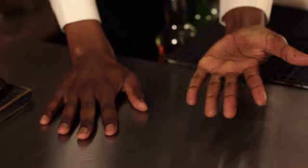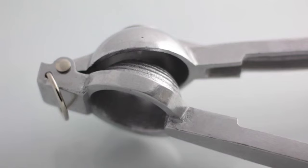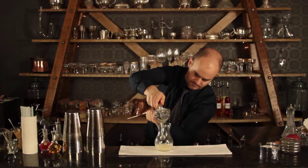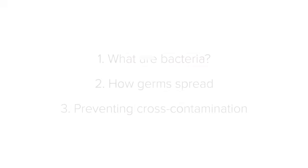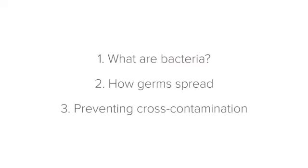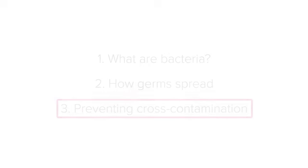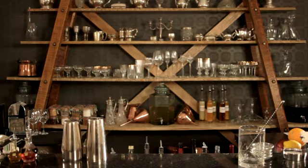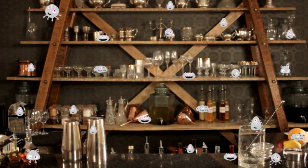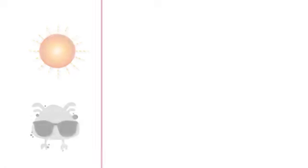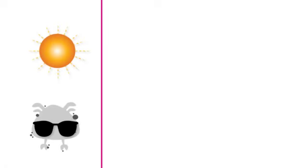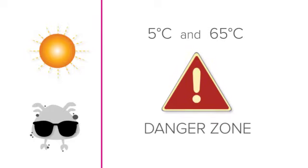Our hands and equipment need to always be clean so that they don't contaminate the drinks that we prepare with germs. Let's finish off with preventing cross-contamination. One of the most frightening things about germs is that they multiply — increase in number — under certain conditions. For this to happen, the spoilage bacteria need warmth. Germs multiply most between 5 degrees centigrade and 65 degrees centigrade. This is known as the danger zone.